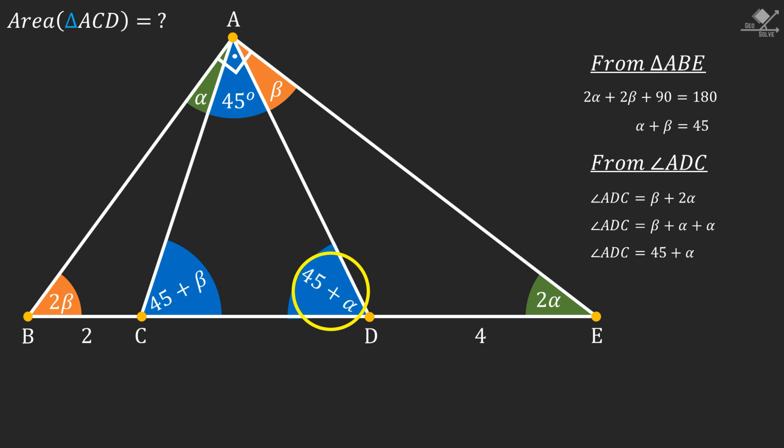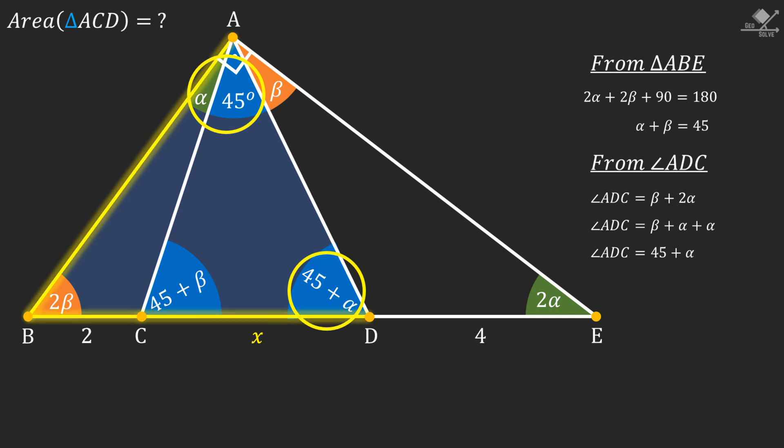Now let's call the length of the line segment CD as x. And notice that triangle ABD is an isosceles triangle with equal base angles of 45 + α degrees. Therefore corresponding sides to these angles should be equal in length. So line segment AB will be x + 2 units.